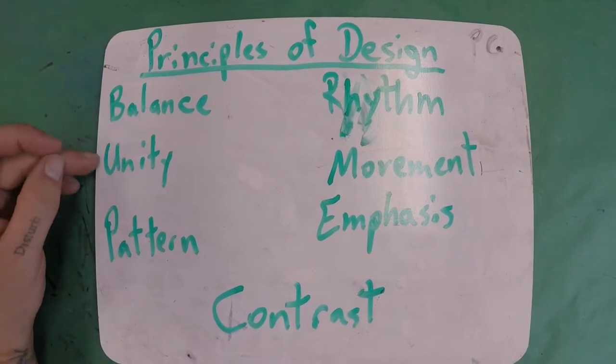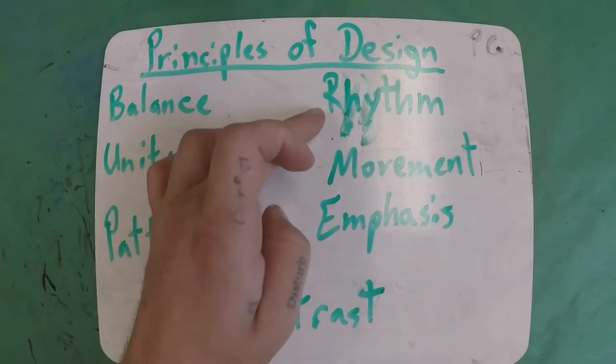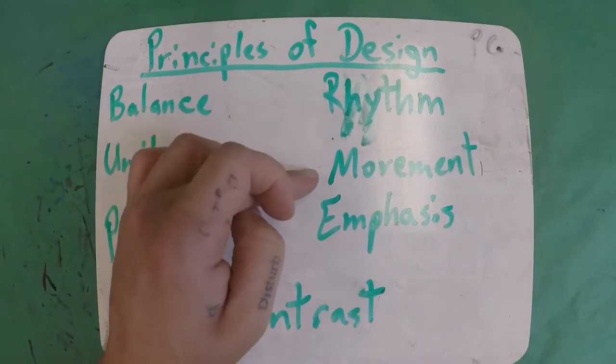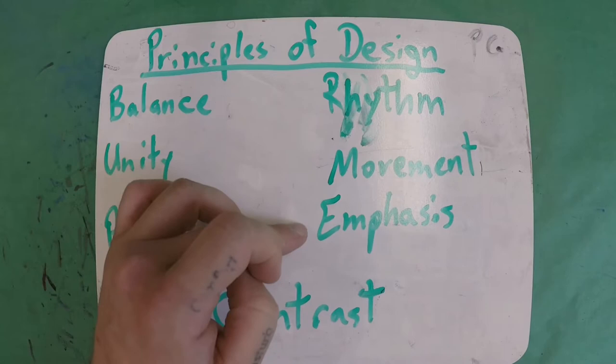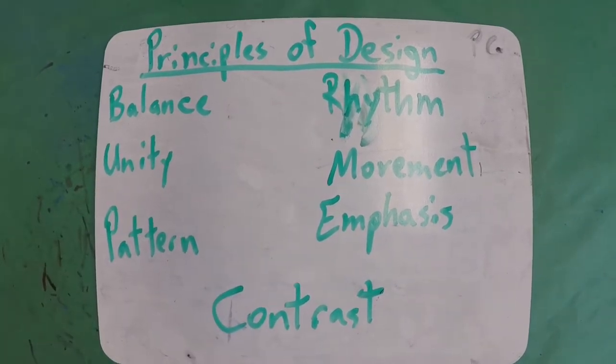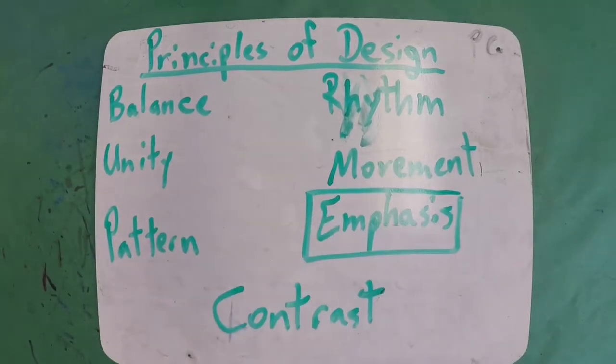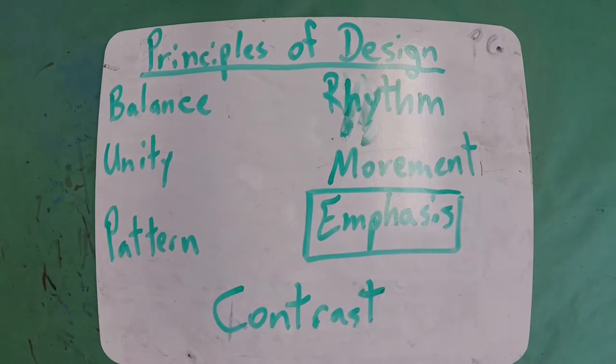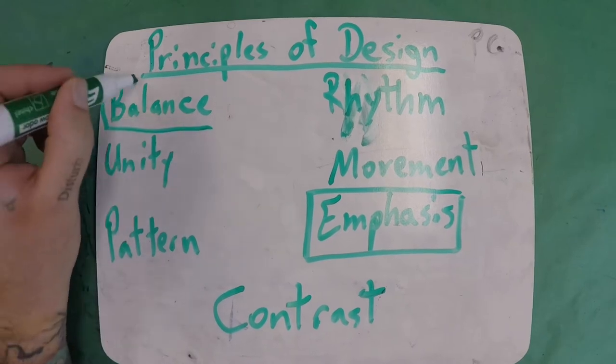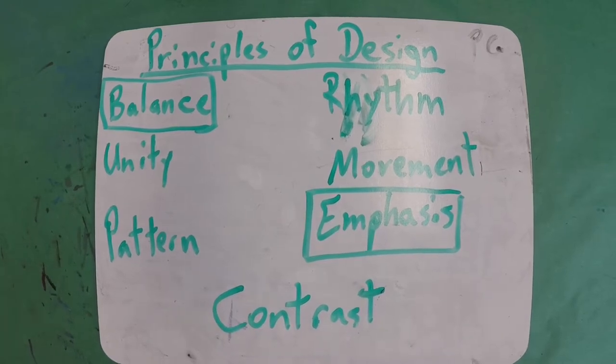Balance, unity, pattern, rhythm, movement, emphasis, contrast. So here, we're going to have ourselves, we're going to create ourselves an emphasis within this drawing that we're going to create. We're going to try to create some balance. We'll talk about that as we get to our color. That'll come after the drawing when we're ready to move into color.